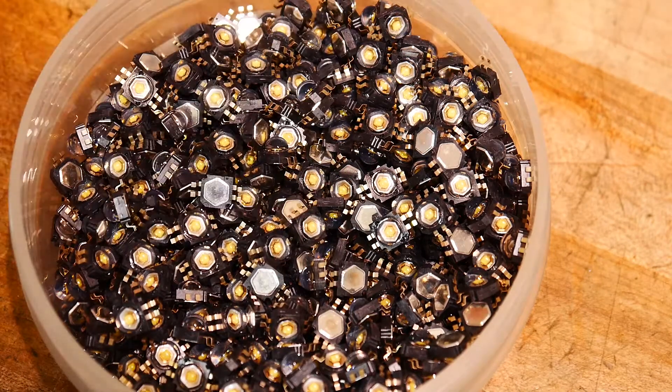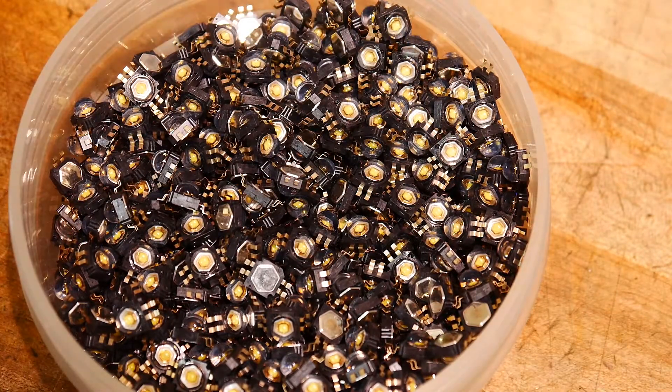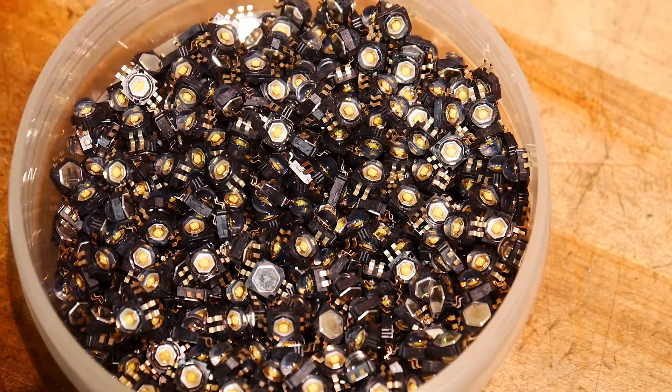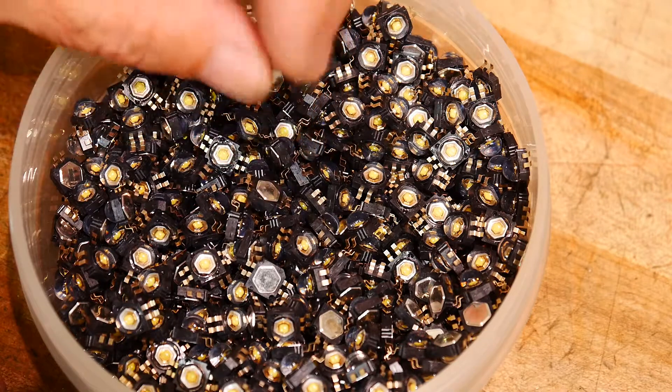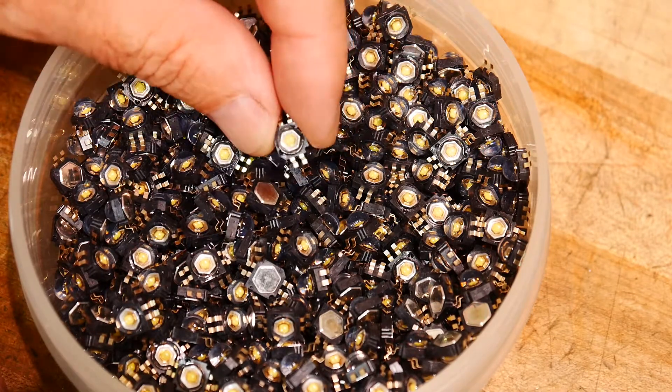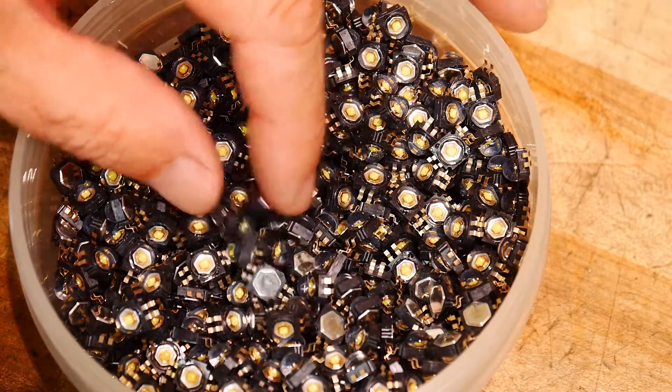Then they started making gallium phosphide, gallium aluminum phosphide. Then later in life they started making gallium nitride. These are gallium nitride with phosphor on them, they're white. They're very crude white, they're just cerium phosphor on top of the LEDs. So these are cool white, like 6500 degrees Kelvin. And they're very, very old technology.